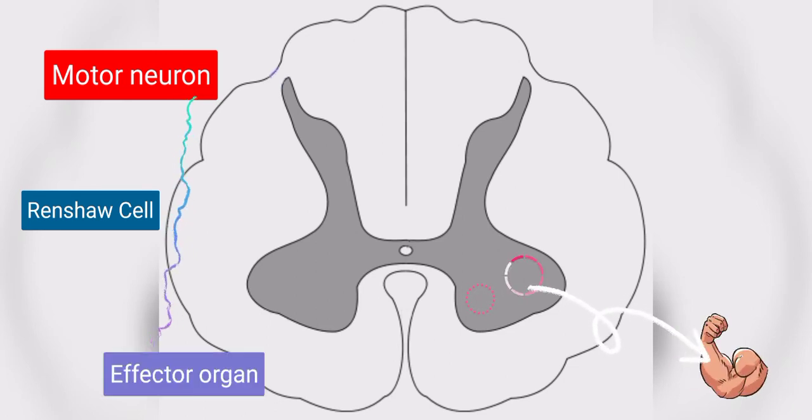Some of the nerve fibers, instead of reaching effector organs, terminate onto Renshaw cells. These are called collateral fibers.